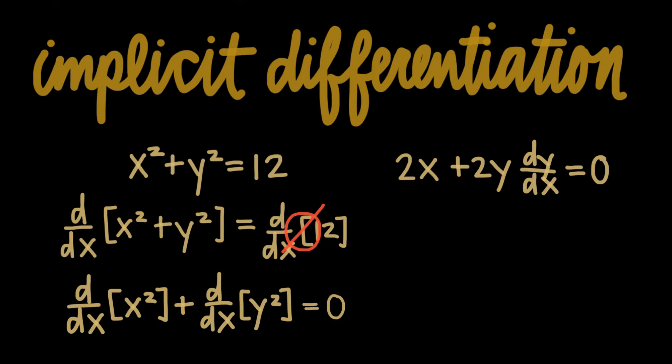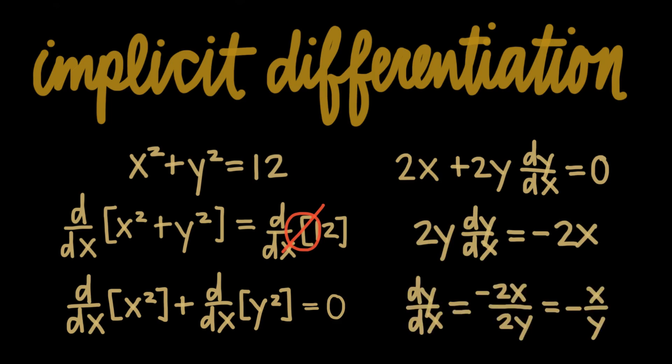Once you have the entire function differentiated with respect to x, we just need to use algebra to solve for dy over dx, which remember is the derivative of y with respect to x. This is the question we've been working to solve all along. In this case, we found that the derivative of y with respect to x is negative x over y.